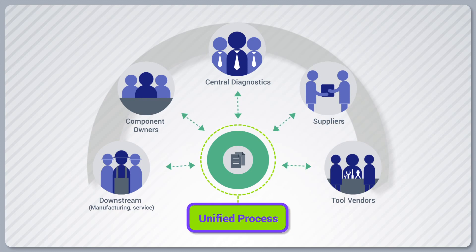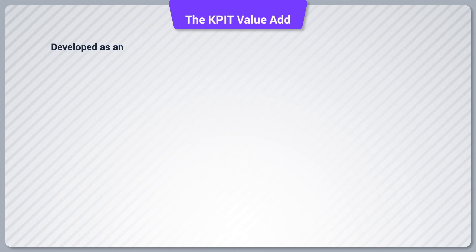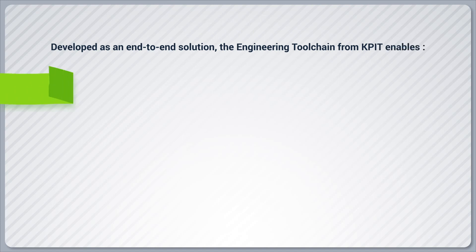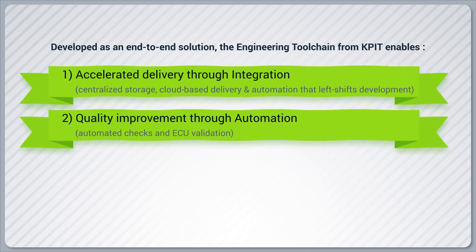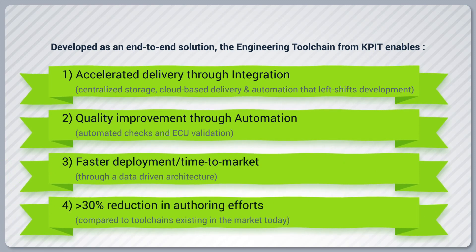Ensuring end-to-end traceability from requirements to validation, developed as an end-to-end solution, the engineering toolchain from KPIT enables accelerated delivery through integration, quality improvement through automation, faster deployment, time to market, and more than 30% reduction in authoring efforts.